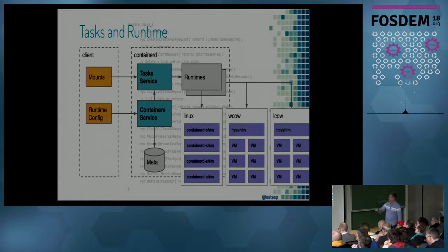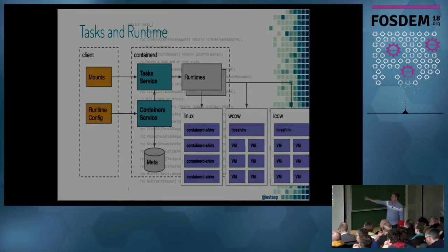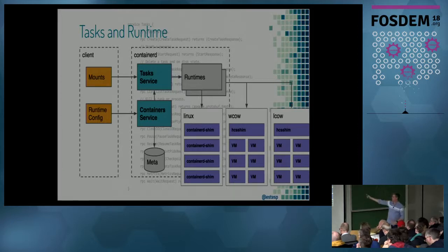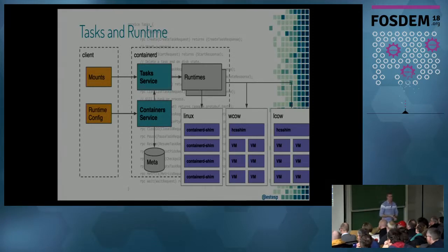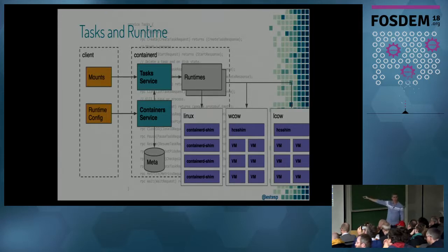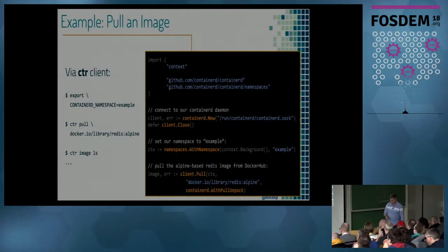Running a container — getting that list of mounts and the OCI configuration — those are the two pieces of information needed: filesystem and config. Those services can hand that to any supported runtime. Whether you use RunC, which is the default Linux runtime, Microsoft is working on their Windows containers and Linux containers on Windows runtimes through their shim. You can also replace RunC with Hyper.sh or Intel Clear Containers. Because of this decoupled architecture, these pieces don't have to know about the runtime — any OCI-implementing runtime can take that information and run your container.